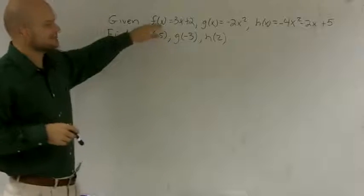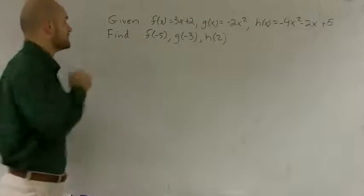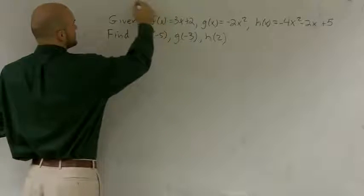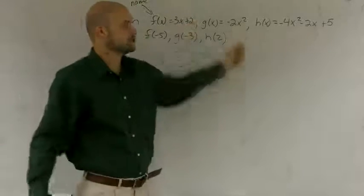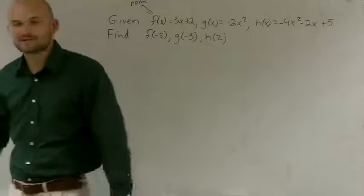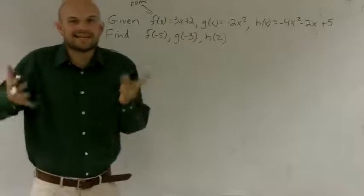So what we have here, though, is instead of doing output as y, we leave it as f of x. And what f of x represents, f is your name. So this could be like Frank, Grant, and Hugh. I don't know, I just made up those names. But that's what f, g, and h are. They're just names. We put them there to name them so we can distinguish between two different functions, right?